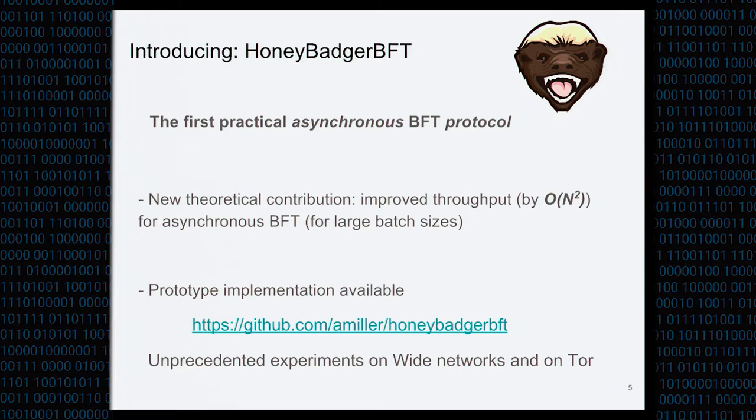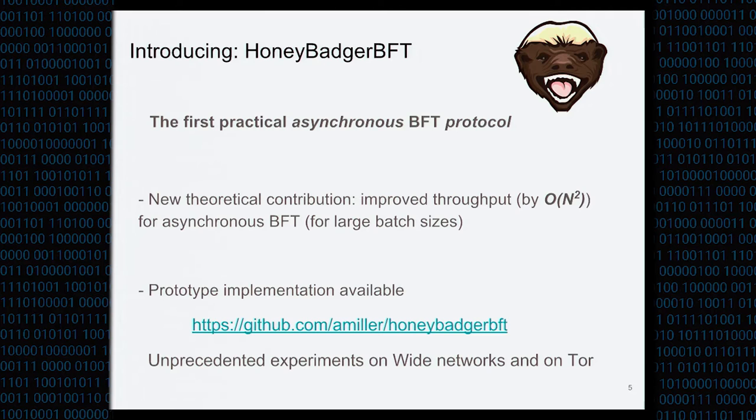What I'm here to talk about is our protocol called Honey Badger BFT, which is the first practical asynchronous protocol to fill out that quadrant. The theoretical contribution we needed to make this work was to improve throughput by roughly N-squared compared to prior known work in asynchronous protocols for the batch setting, which is appropriate for permissioned ledgers. We also have an implementation available on GitHub, and I'll discuss experiments on wide-scale networks showing that this is practical.